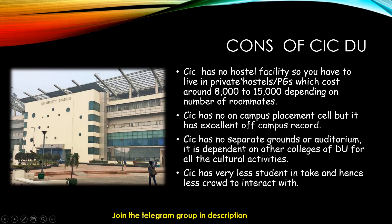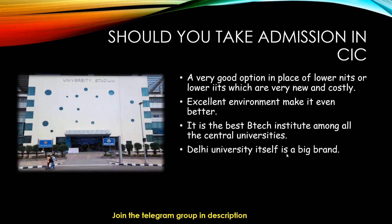The major con of CIC DU is that it has no hostel facility, so you have to live in private hostels and PGs. The cost ranges from 8,000 to 15,000 rupees per month depending on the number of roommates — with three roommates it ranges from 8,000 to 10,000 rupees, and with two or one it ranges from 14,000 to 15,000 rupees including mess and laundry charges. CIC has no on-campus placement cell, but it has an excellent off-campus record. It also has no separate grounds or auditorium and is dependent on other DU colleges for cultural activities. With only 50 students, you will not get a large crowd, but being on North Campus, you will not regret it.